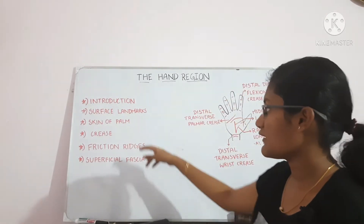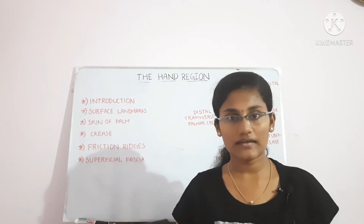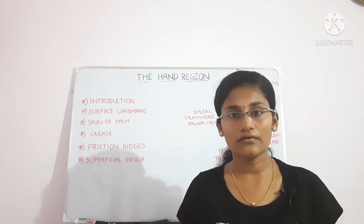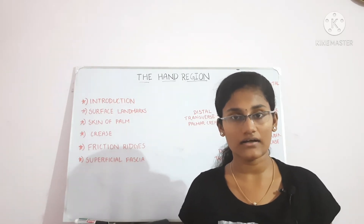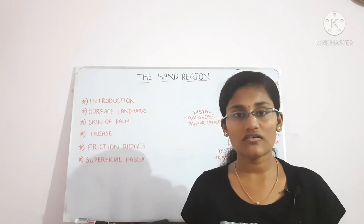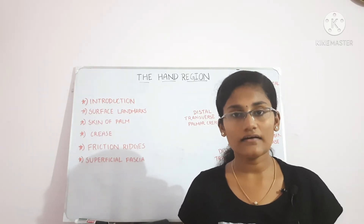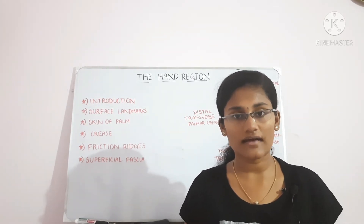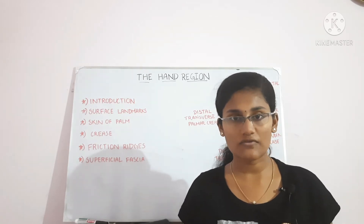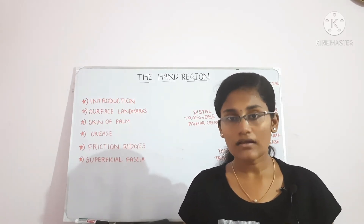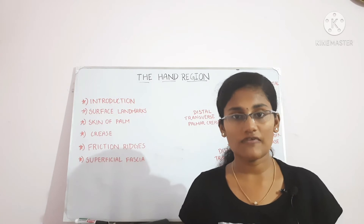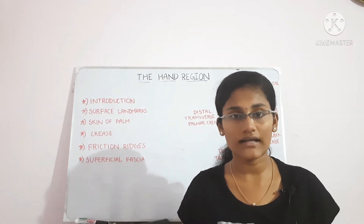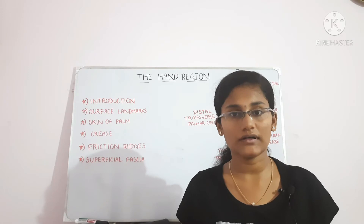The skin of the palm can undergo wear and tear because we use our hands all the time. In the palmar aspect, sebaceous glands and hair are absent; instead, sweat glands are present. The skin of the palm is immobile and is firmly attached to the deep fascia at certain places, which form the palm creases.